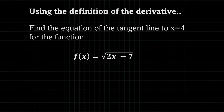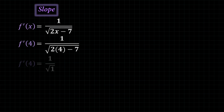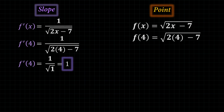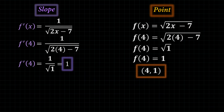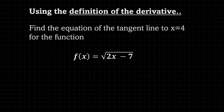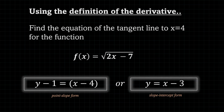To find the slope, we look at the x-value, which is 4. We plug 4 into our derivative, giving us a slope of 1. To find the point, we plug 4 into the original function, giving us a y-coordinate of 1, which means the point has coordinates (4, 1). We plug these into the point-slope form. The final answer is this in point-slope form, or this in slope-intercept form. Those are all the examples for this video.